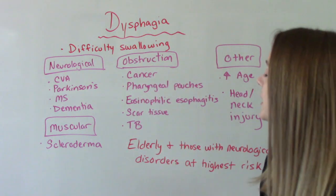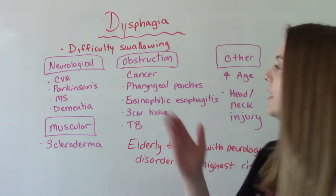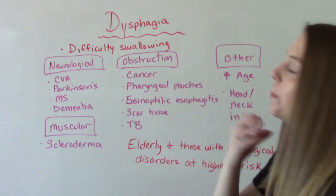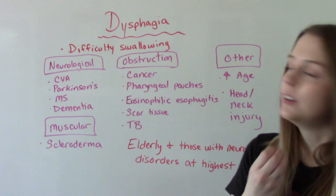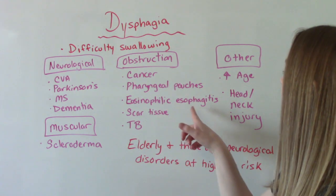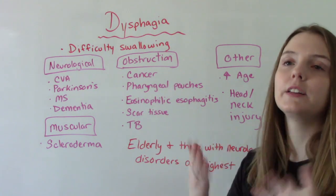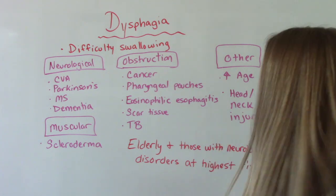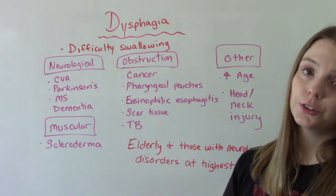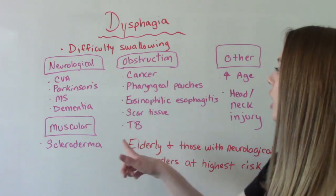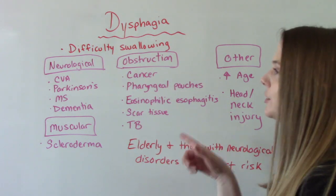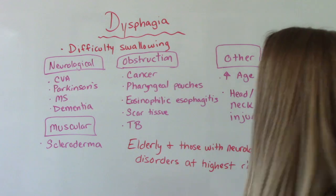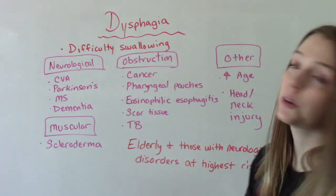There could be an obstruction — something in the way like mouth or throat cancer, a pharyngeal pouch, eosinophilic esophagitis, which is like a buildup of eosinophils — those white blood cells — scar tissue typically related to radiation for throat cancer, and then tuberculosis.